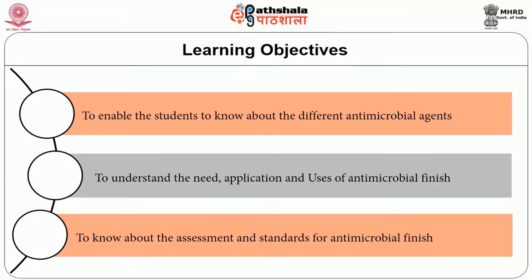Numerous antimicrobial agents are available for textile finishing like triclosan, silver nanoparticles, quaternary ammonium compounds etc. However, due to their synthetic origin, they affect the environment. Hence, natural antimicrobial agents are gaining momentum for their excellent therapeutic potential and efficiency in treating infectious diseases. The objectives of the present module are to enable students to know about different antimicrobial agents, to understand the need, application and uses of antimicrobial finish, and to know about the assessment and standards for antimicrobial finish.